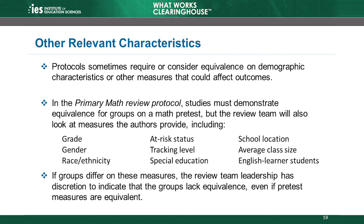A review protocol may require studies to consider other characteristics beyond pretest measures when assessing baseline equivalence. For example, the primary mathematics review protocol requires studies to note differences in certain reported characteristics, including gender, English learner status, percentage of students receiving free or reduced-price lunch, and others. In the case of the primary math review protocol, when baseline differences exceed 0.50 standard deviations, the review team leadership has discretion to indicate that the groups lack equivalence, even if pretest measures are equivalent. This requirement and the characteristics included vary by review protocol.